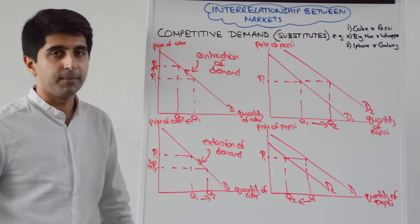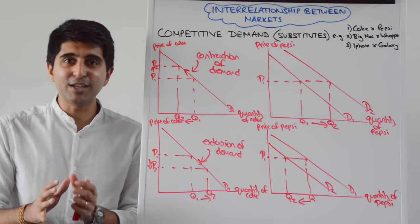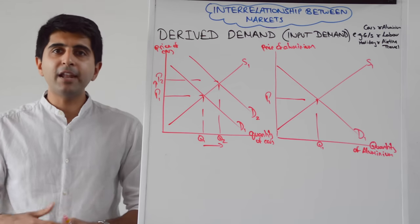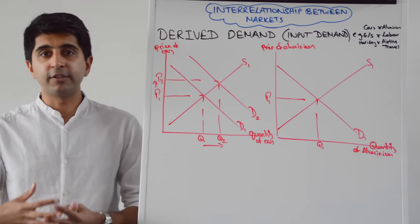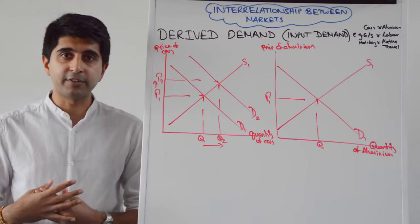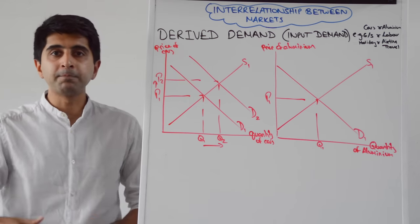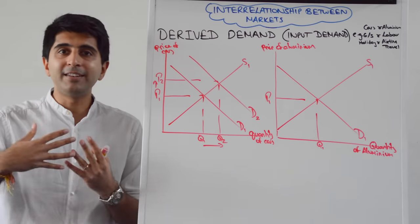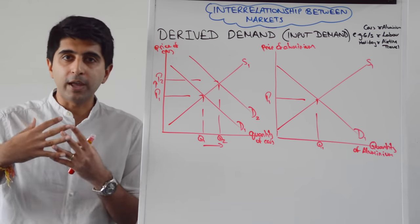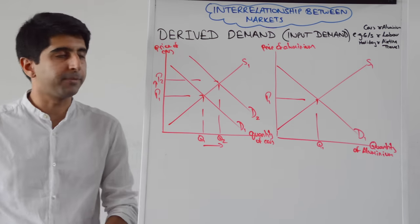That's how we show it simply on diagrams. Let's continue now by looking at derived demand. Derived demand is when the demand for a good or service comes from the demand for something else — it's derived from the demand for something else. You can think of this as input demand. When demand for something increases, demand for the input will increase too, so inputs are a derived demand coming from the demand for something else.